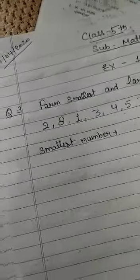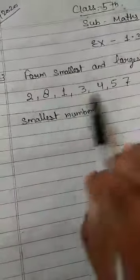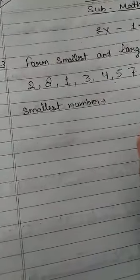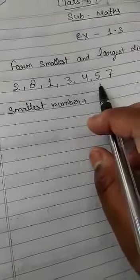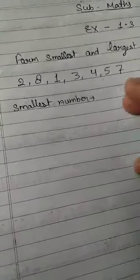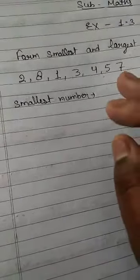We write the number in ascending order. Ascending order means increasing order, from small to larger. Now, we will do the smallest number.